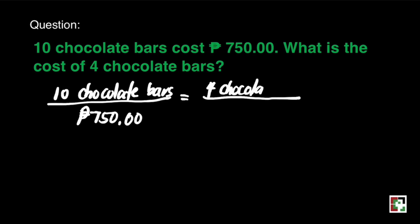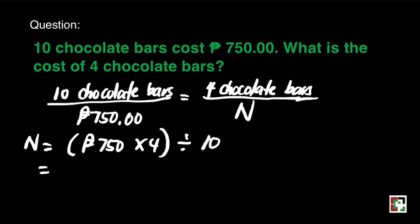Set up this proportion in this way. 10 chocolate bars is to 750 is equal to 4 chocolate bars is to n. So, again, let's do cross multiplication. n is equal to 750 times 4 divided by 10. 750 times 4 will give us 3,000.